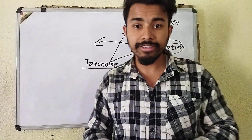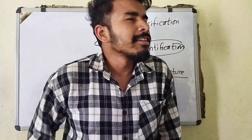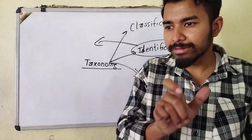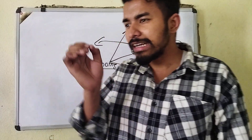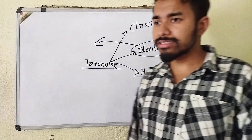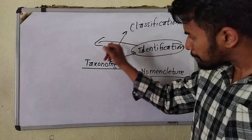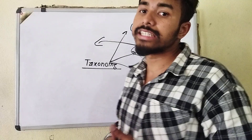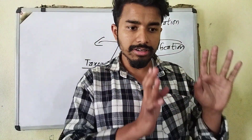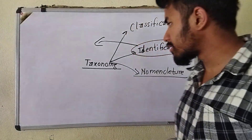Who discovered taxonomy? Carolus Linnaeus. He is the father of taxonomy, or he can be said to be the father of classification of animals, because he mentioned one method of dividing animals into different categories. That is why he is known as the father of taxonomy — Carolus Linnaeus.